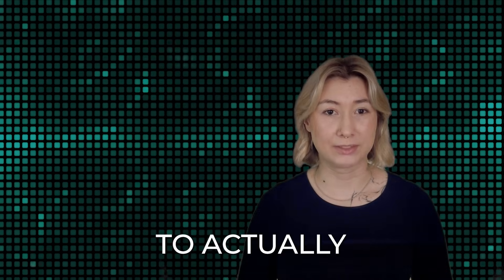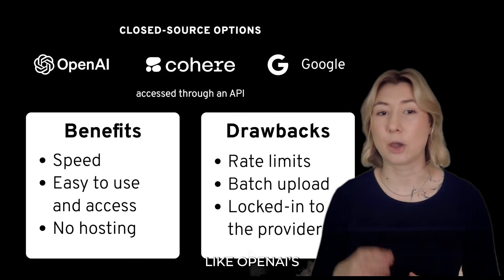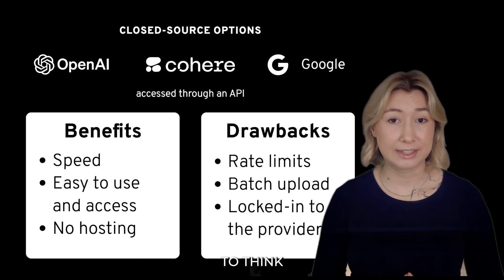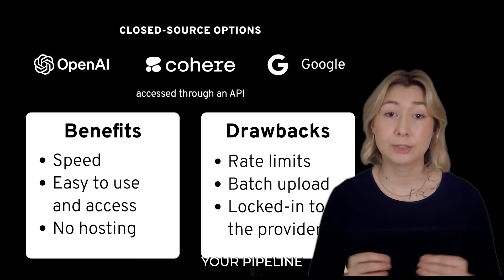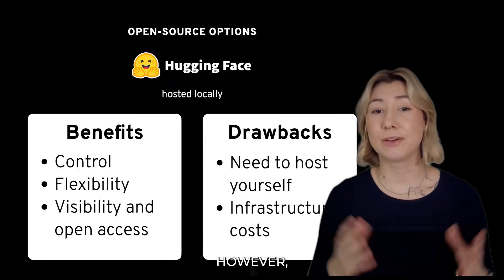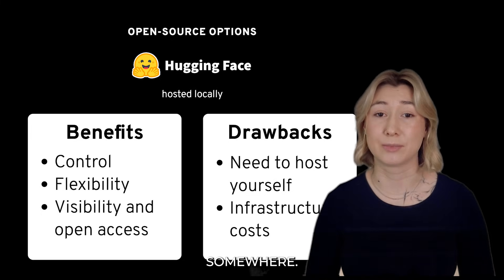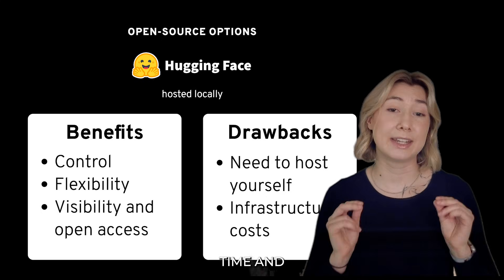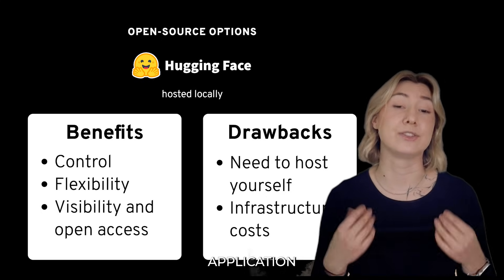How you interact with your model to actually get your embeddings is important too. If you're using something closed-source, like OpenAI's or Cohere's embedding models, then you probably need to think about rate limits and batch processing through the API, which can often slow down your pipeline or just provide a developer headache. However, if you're planning on using open-source models, you need to worry about hosting the model somewhere, which is often complex and requires ongoing maintenance.